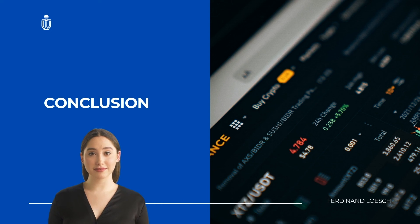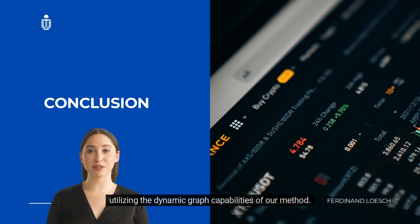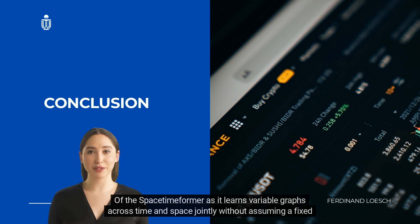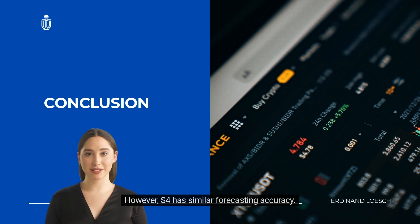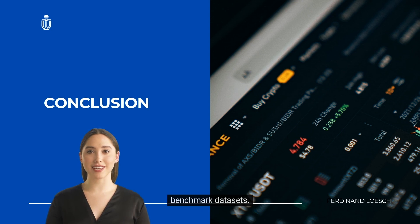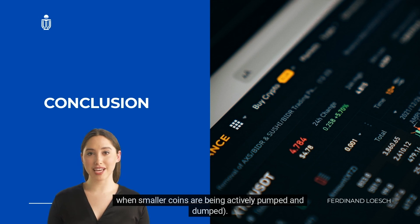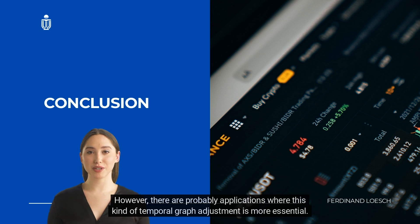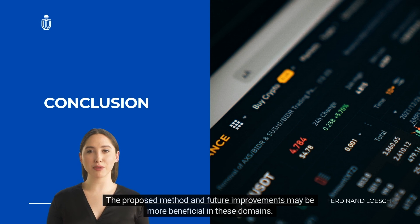Another future direction is solving the problem of scaling predictions correctly across various variables — market movement direction was typically identified correctly, but with an incorrect scale causing significant loss. This can be addressed by researching different data processing methods. It is also unclear whether we are fully utilizing the dynamic graph capabilities of the Spacetime Former. Since S4 achieves similar forecasting accuracy, adapting variable relationships over time may have limited benefit in crypto benchmarks. However, the dataset does contain situations where adaptive graphs are beneficial, such as when smaller coins are being actively pumped and dumped. The proposed method may be more impactful in domains where temporal graph adjustment is more essential.